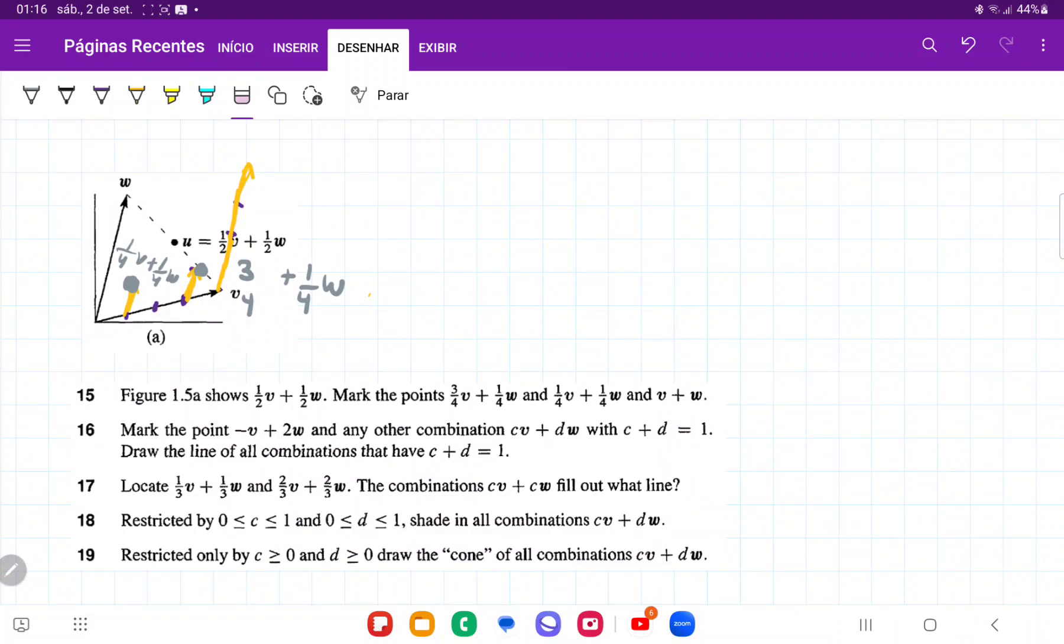So we can see, and maybe this got a little bit crowded. So I'm just going to draw the points. I'm going to remove everything else. And then this would be the point of v plus w.